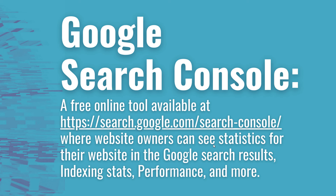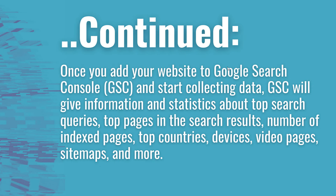Website owners can see statistics for their website in the Google search results. You can see indexing stats, you can see performance, and whether you have performance issues in terms of slow website speeds. So there's a lot of different things you can see in Google Search Console. Once you add your website and start collecting data, it will give you information about the top search queries driving traffic to your website, the top pages driving clicks and impressions in the Google search results. You can look at different types of searches — Google search, image search, news search — and see all sorts of different information about how your website is performing across different Google search engines.